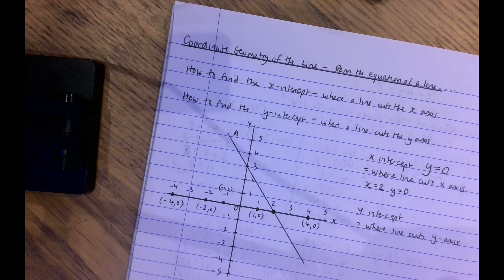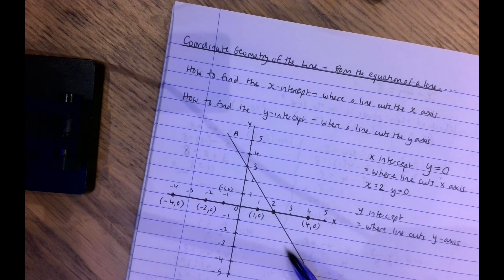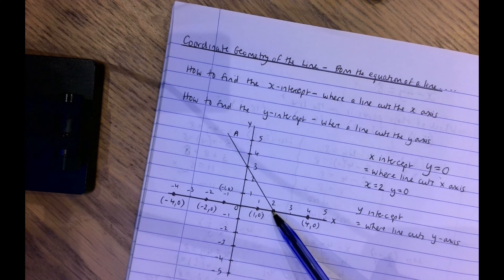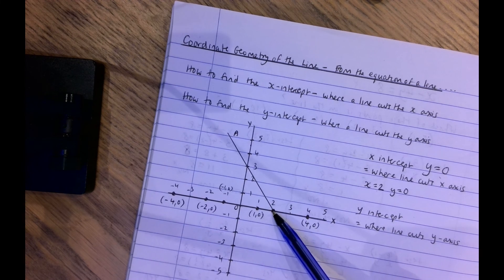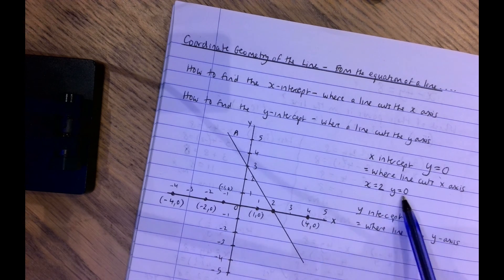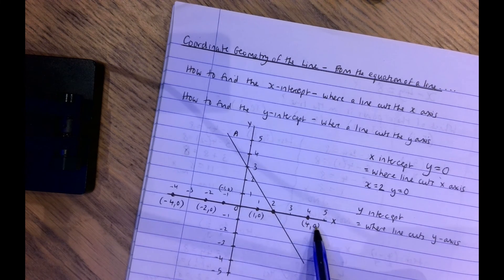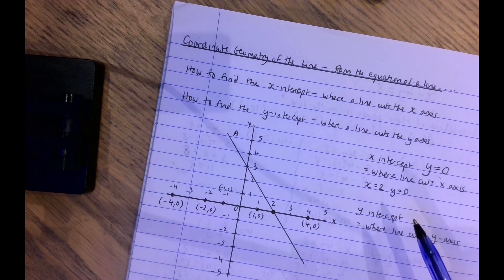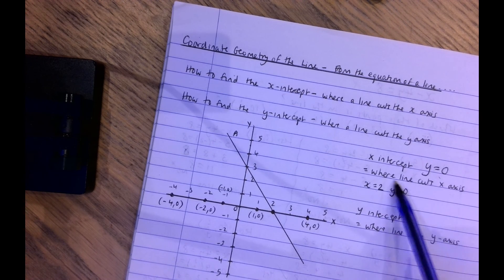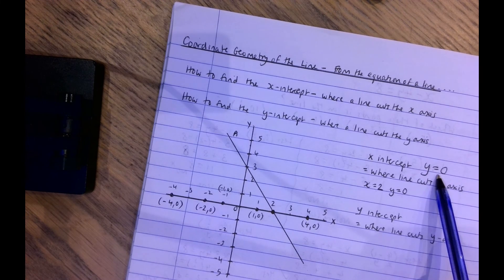Let's go through that again. Here's a line cutting the x-axis at a point where x equals two. Every point has two parts: an x-coordinate and a y-coordinate. We know x equals two, and the point is directly opposite zero on the y-axis, so the y-coordinate is zero. All other points on the x-axis also have a y-coordinate of zero, so wherever a line cuts the x-axis, the y-coordinate is zero, and we can use that to find where it cuts.